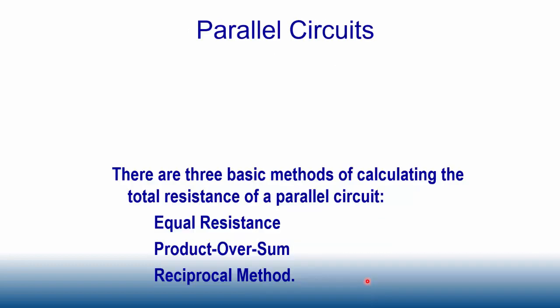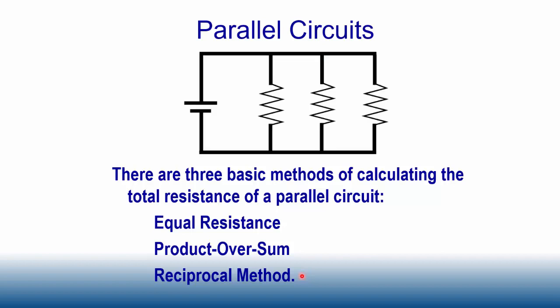For a parallel circuit, there are three basic methods for calculating total resistance. The first is the equal resistance method, the second is product over sum, and the third is the reciprocal method. We'll look at all three, and based on the type of circuit, we'll figure out which is the best method for solving total resistance.